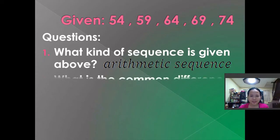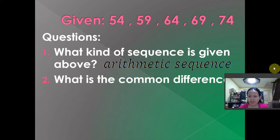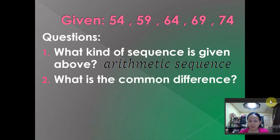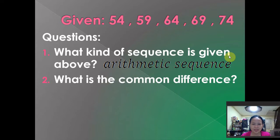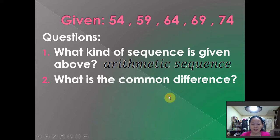Since it's an arithmetic sequence, what is the common difference? To get the common difference, subtract the second term by the first term, or the third term minus the second term. So, 59 minus 54 is 5, and 64 minus 59 is also 5. Therefore, the common difference is 5.